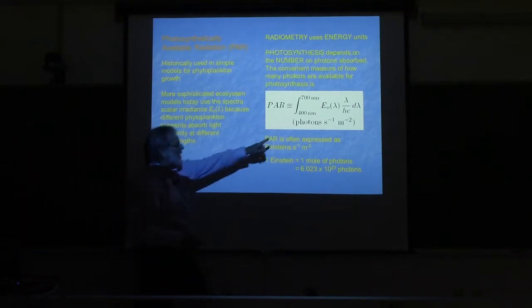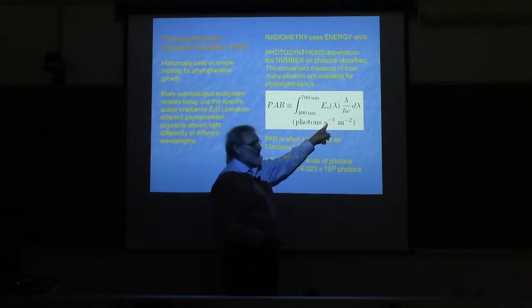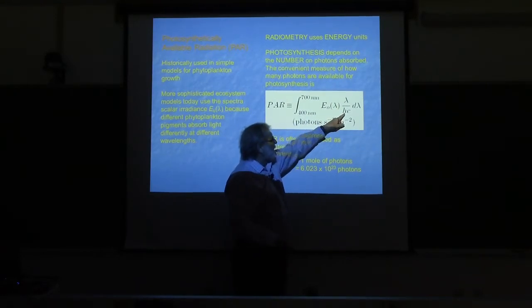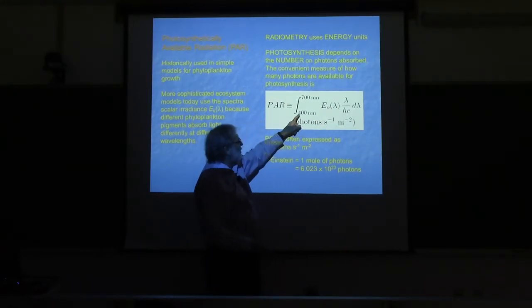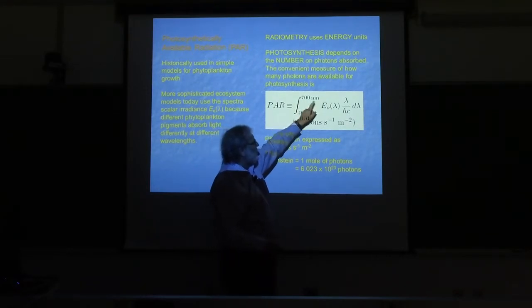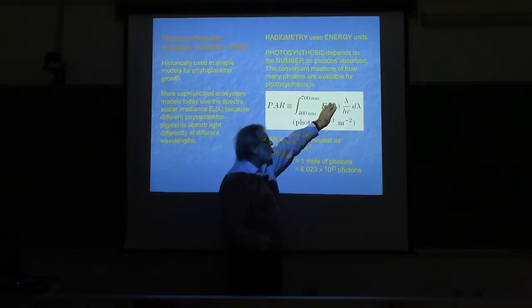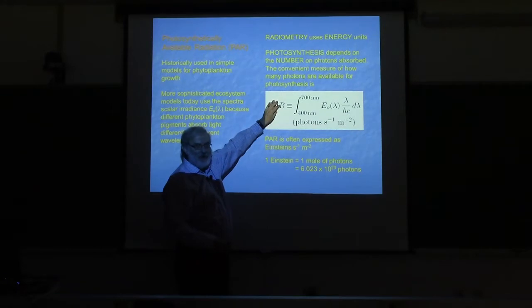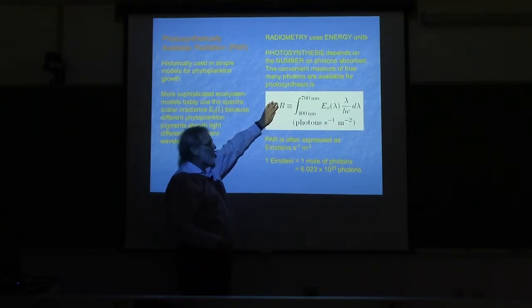Divide by hc over lambda, the energy per photon. This integration from say 400 to 700 converts energy units into numbers of photons per square meter per second.